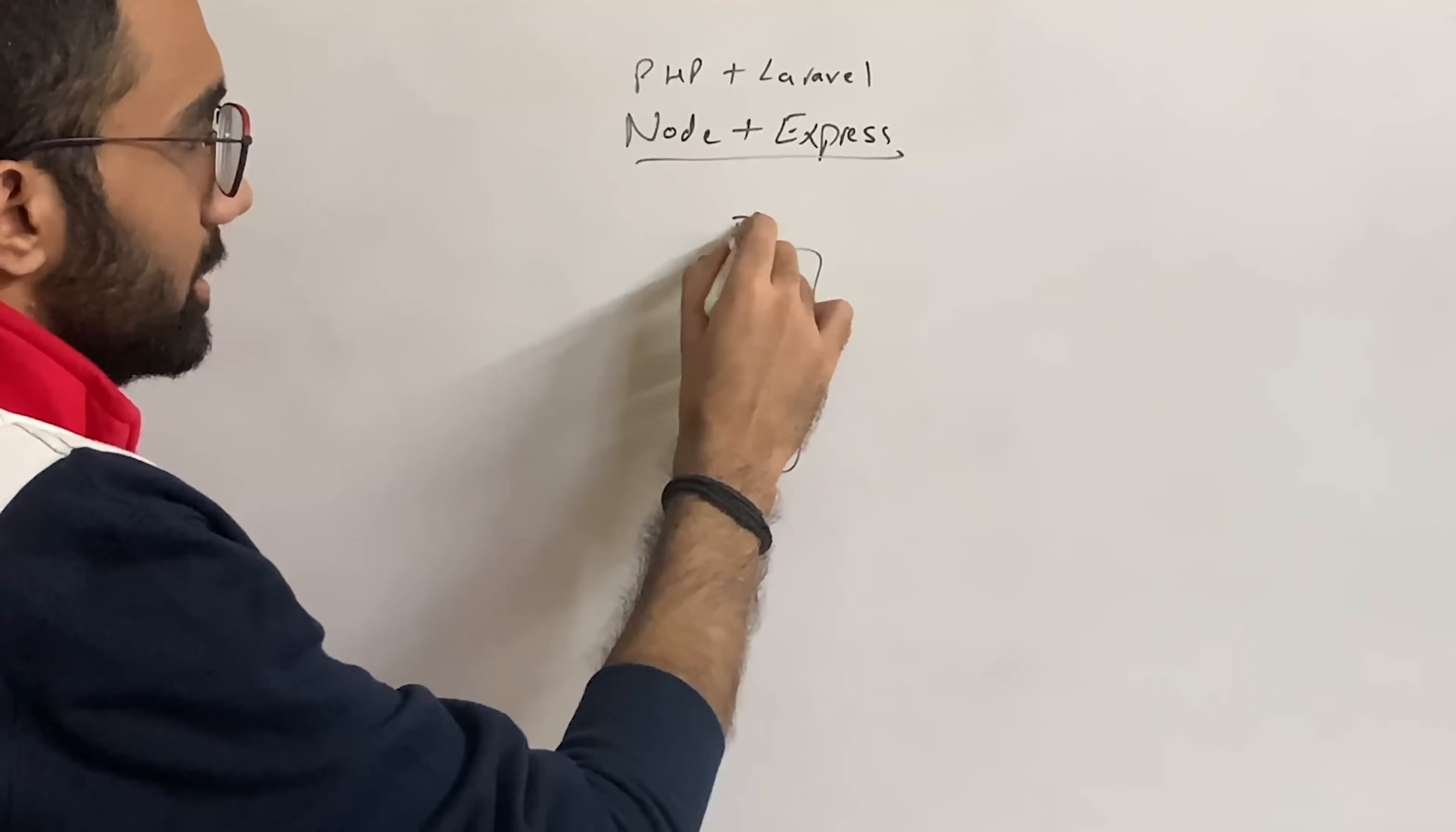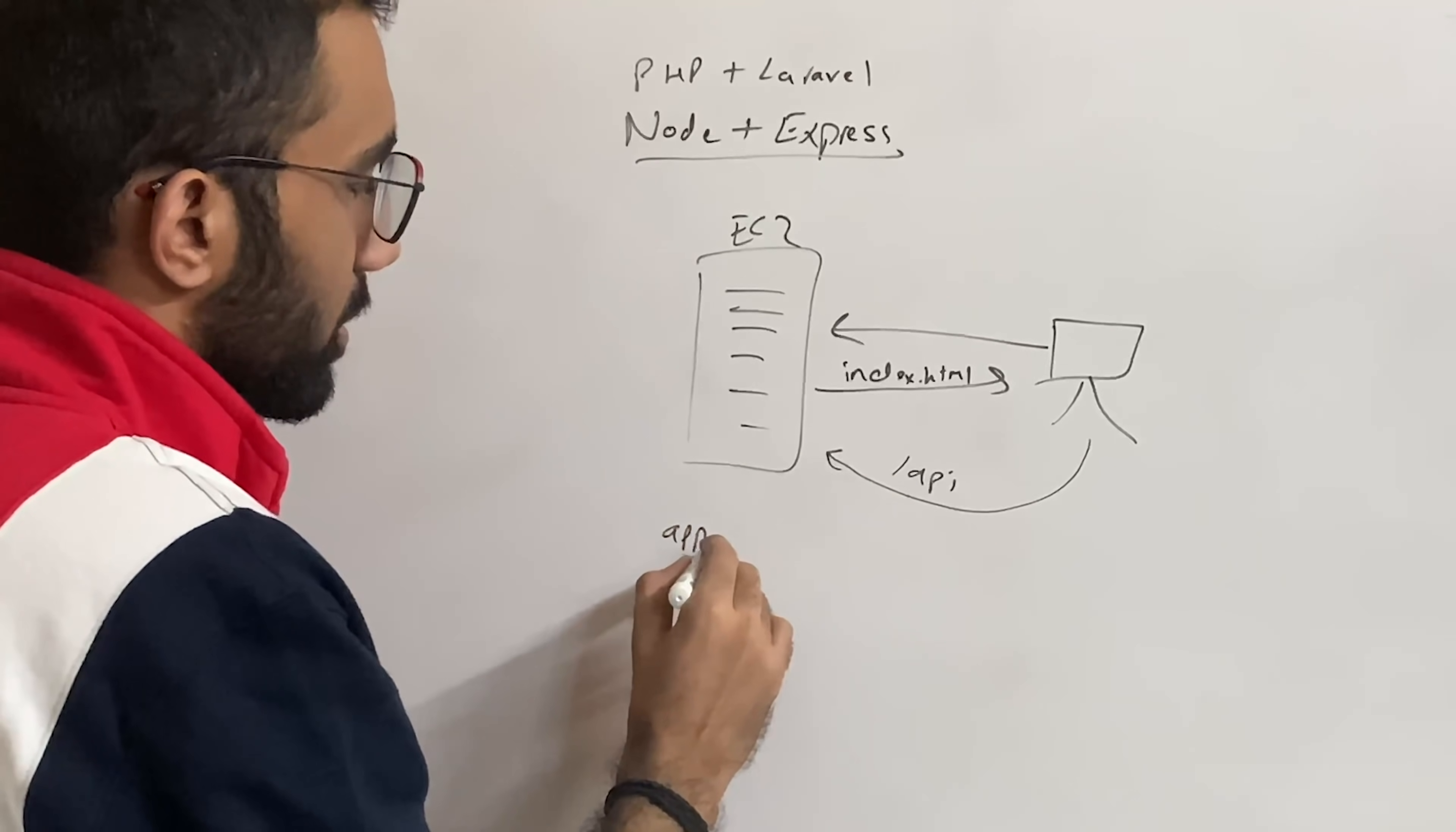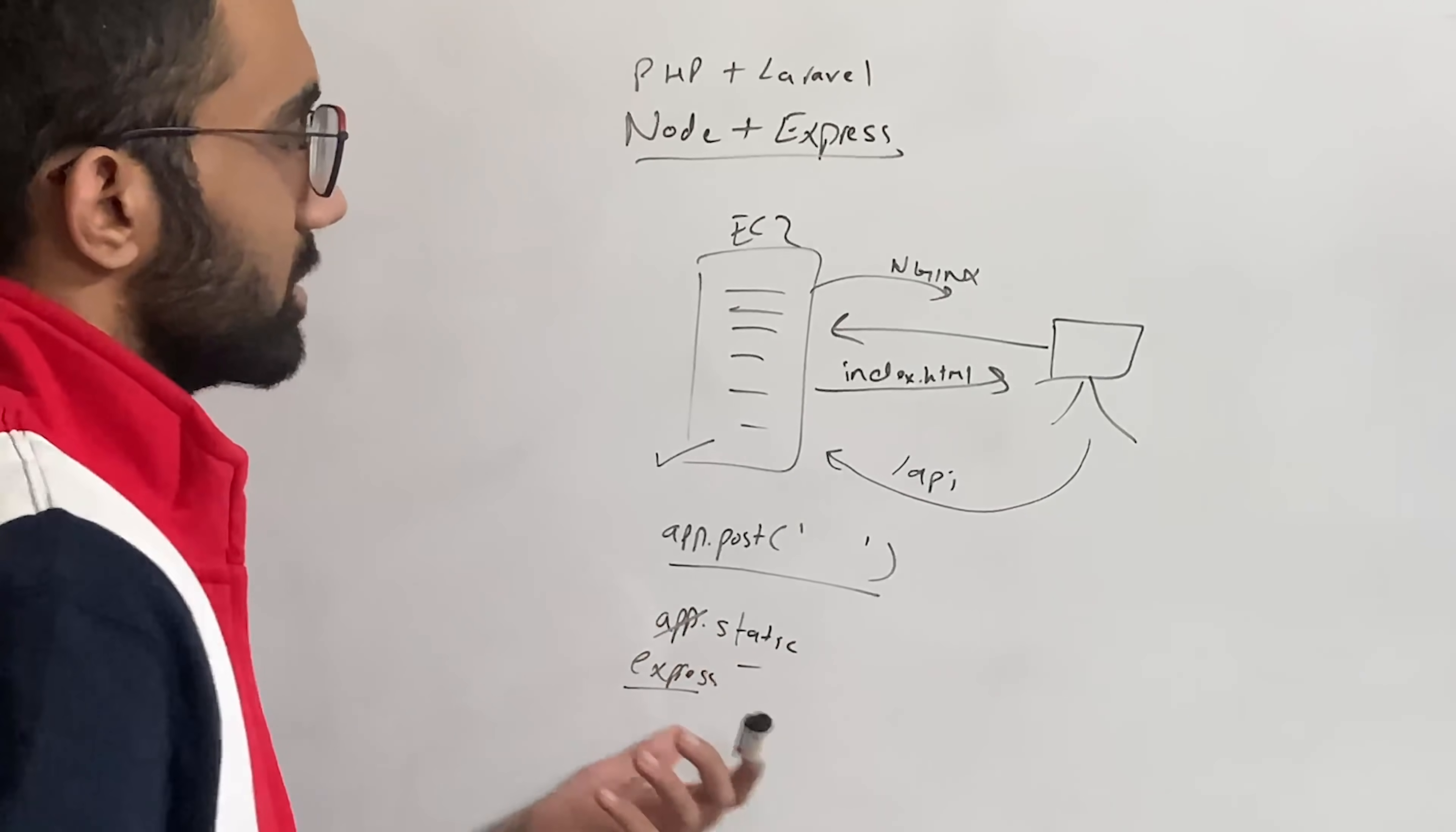So a standard application would look like following. You have a server - let's say this is an EC2 server and you have a client browser. They send the request to you. This EC2 machine sends the files - let's say index.html in this case - and maybe this index.html makes an API request which goes to one of these routes in Express which is like app.post or app.get or anything, and that is also handled by the same application. These static assets for example are either served by Nginx here or maybe just by Express using express.static.